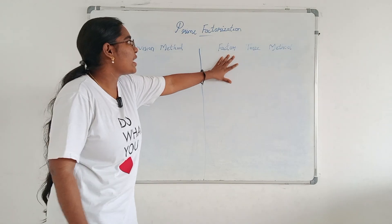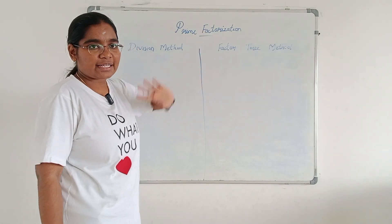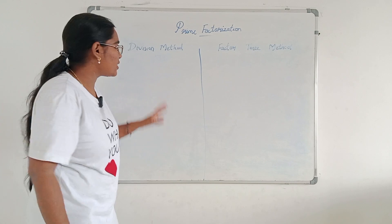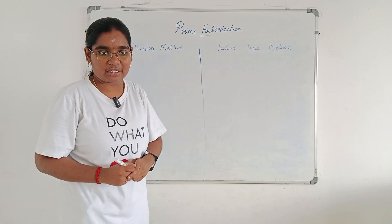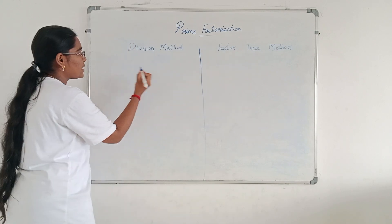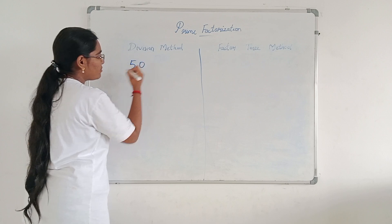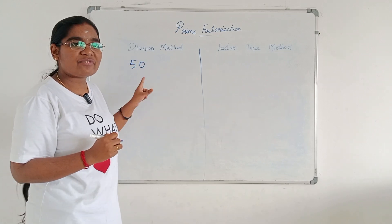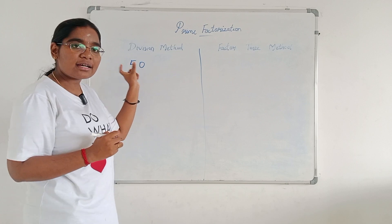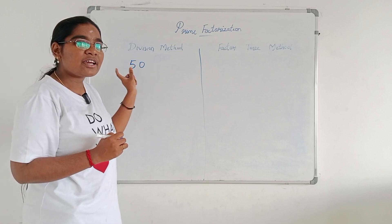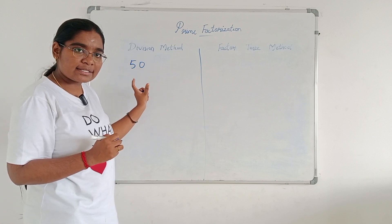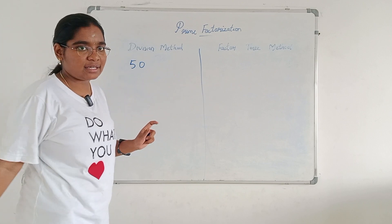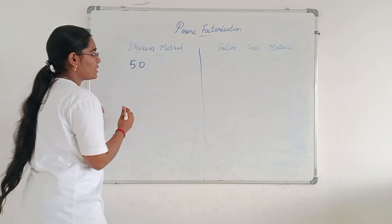Prime factorization can be done by two methods: division method and factor tree method. Let us consider an example — for example, 50. We have to do prime factorization of 50, which is a composite number, writing it as a product of its prime factors. How to do the division method?